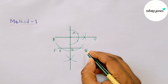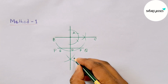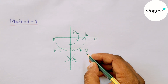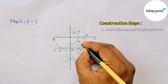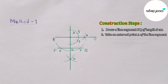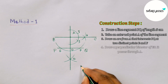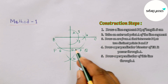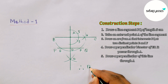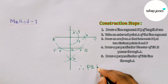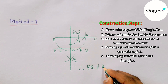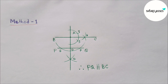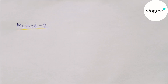Labeling points B, C, D, E, F, G, H, I, J. Here you will get all the construction steps. Therefore PQ is parallel with BC. By this way you can draw a parallel line.